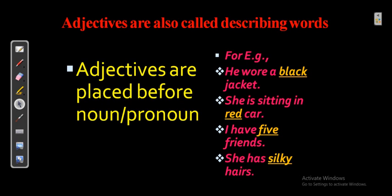'She is sitting in a red car' — the car is red. 'I have five friends' — this indicates the amount of friends. 'She has silky heels' — her heels are silky. This confirms that adjectives are placed before a noun or pronoun. 'Jacket' is the noun and the adjective is placed before it. In a nutshell, adjectives are also called describing words.